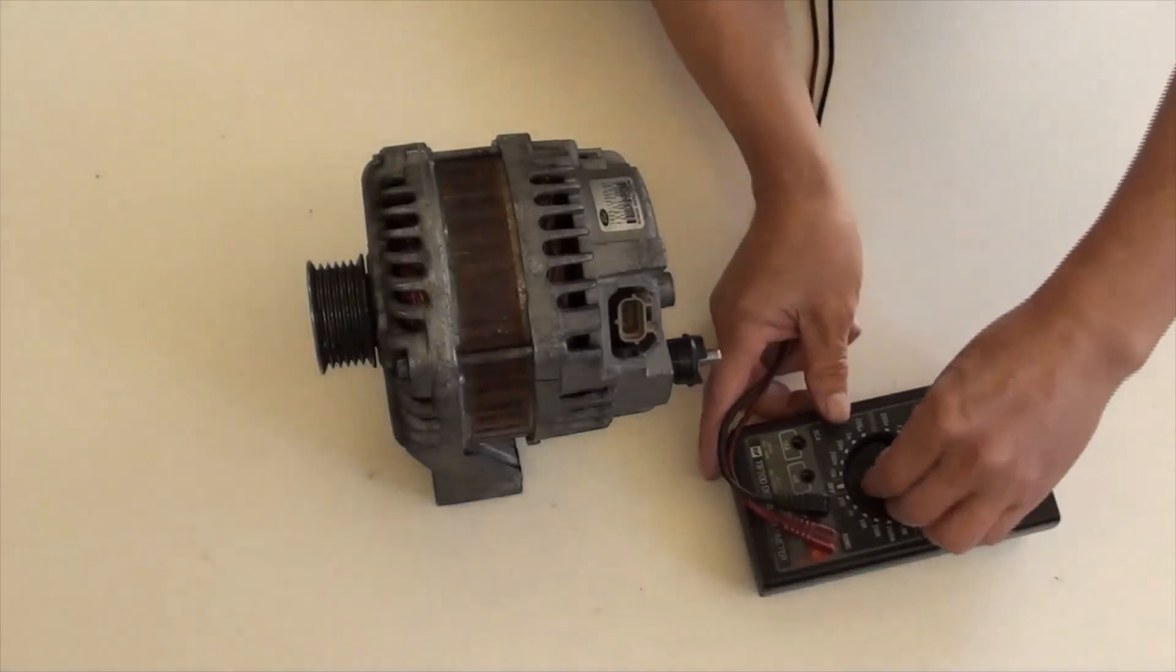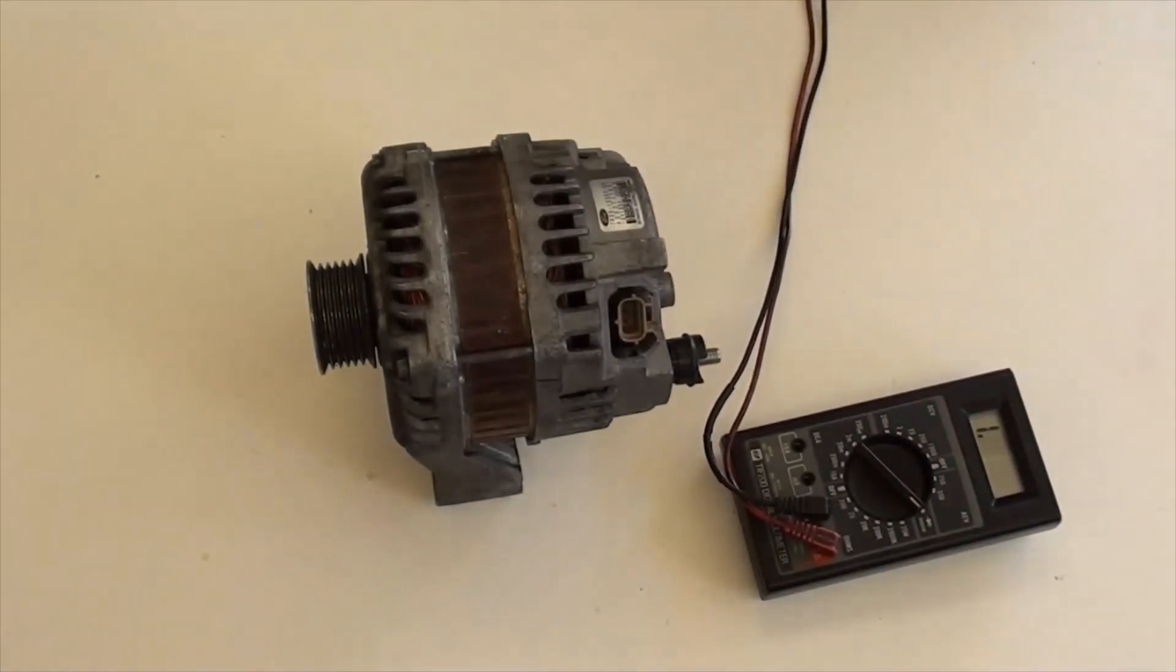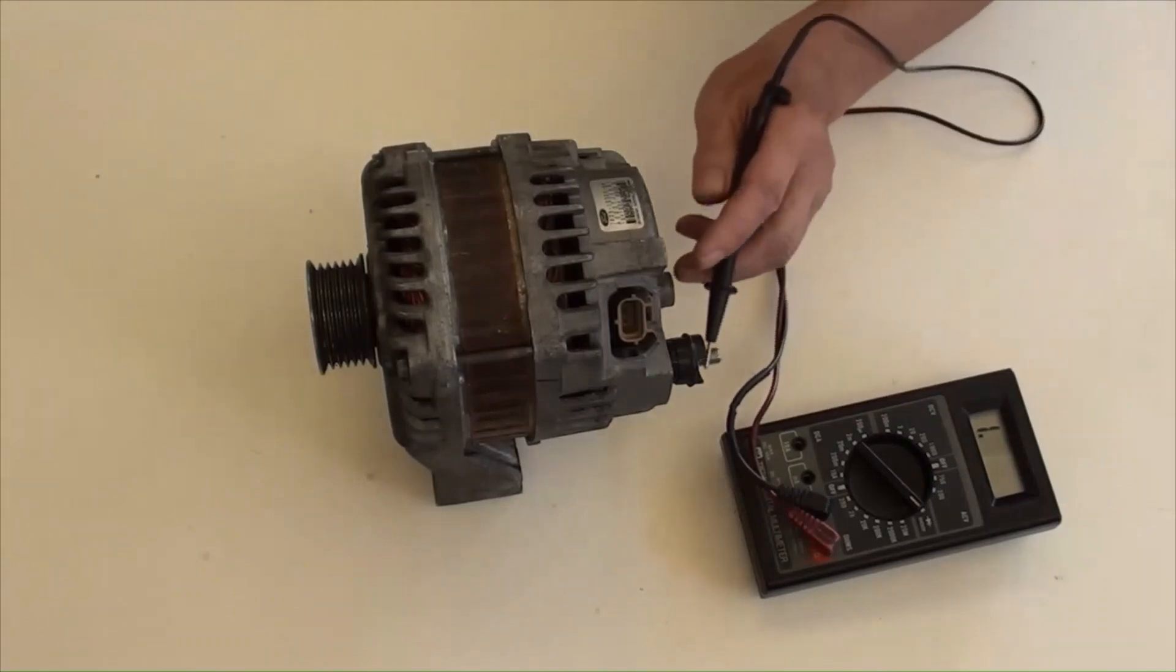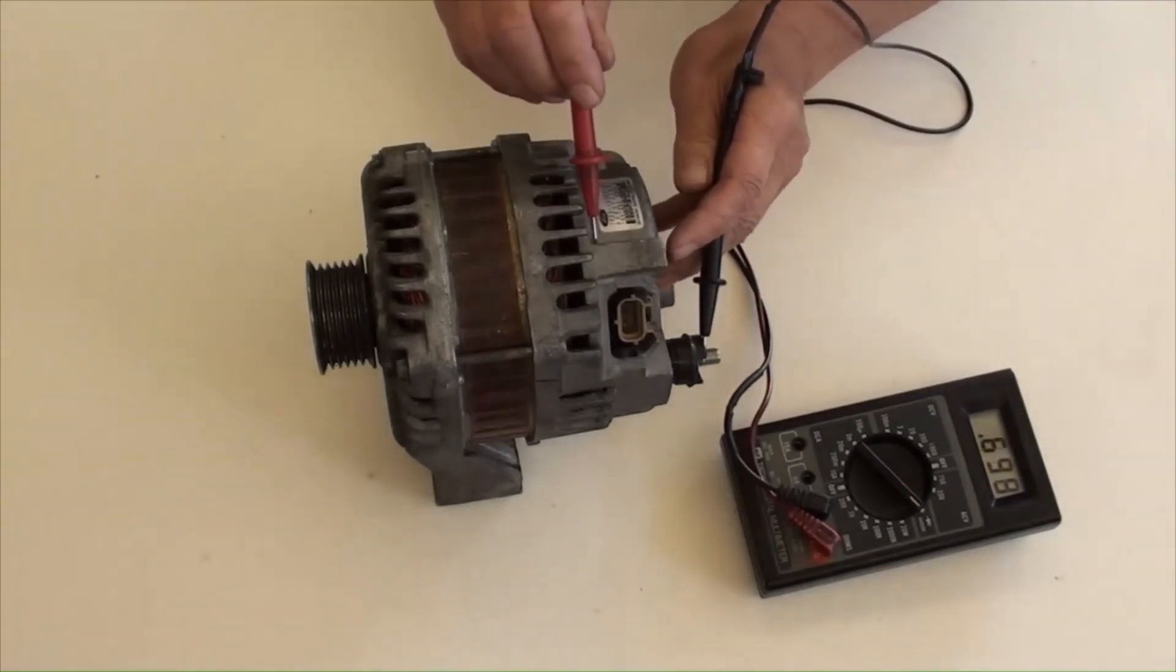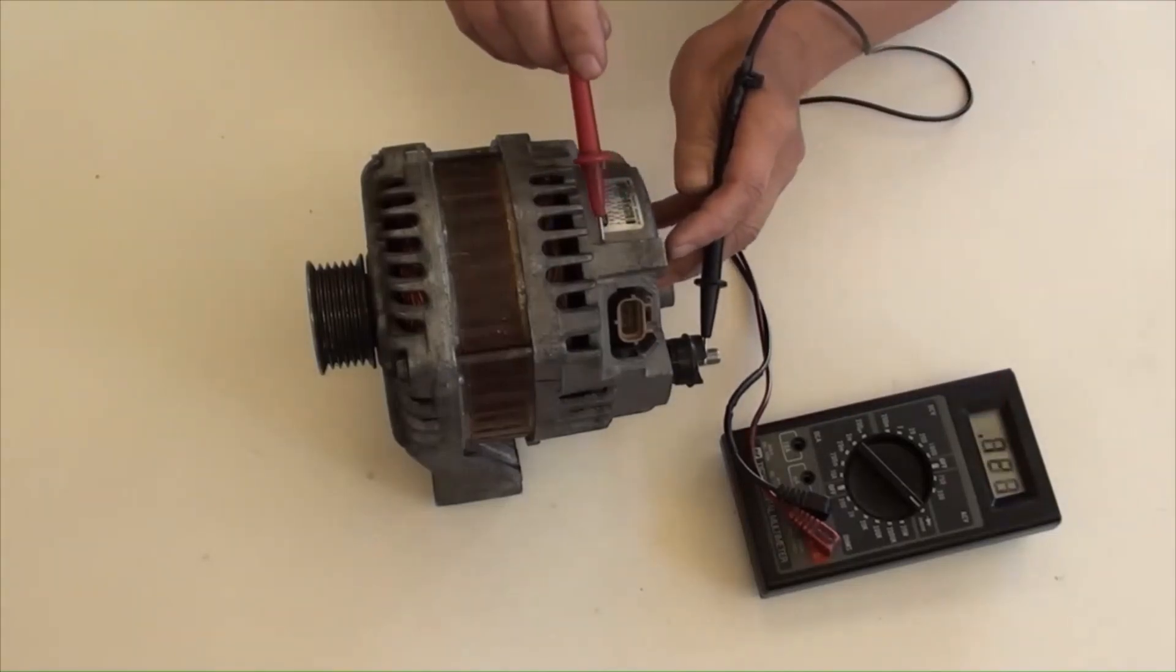Firstly, alternator's diodes for its rectifier testing, by using a multimeter with diode position selected. Contacting the multimeter's black probe to alternator's positive terminal, and red probe to alternator's body. Reading from the meter was continuing, and this is good.